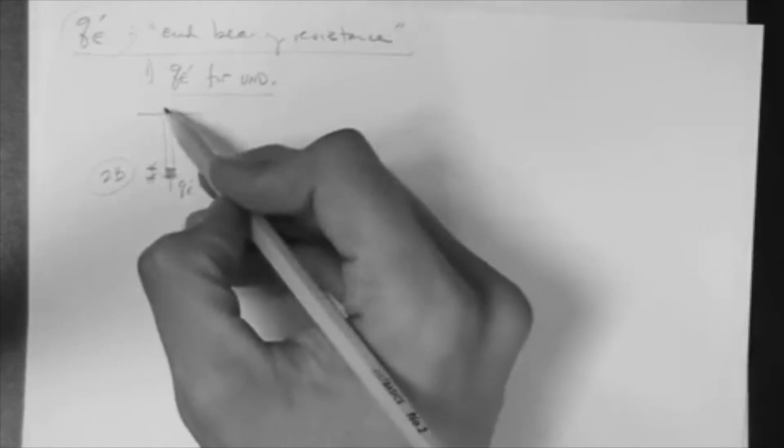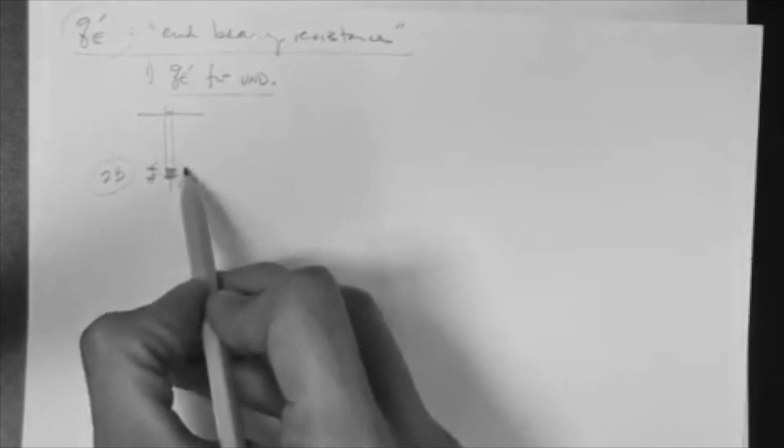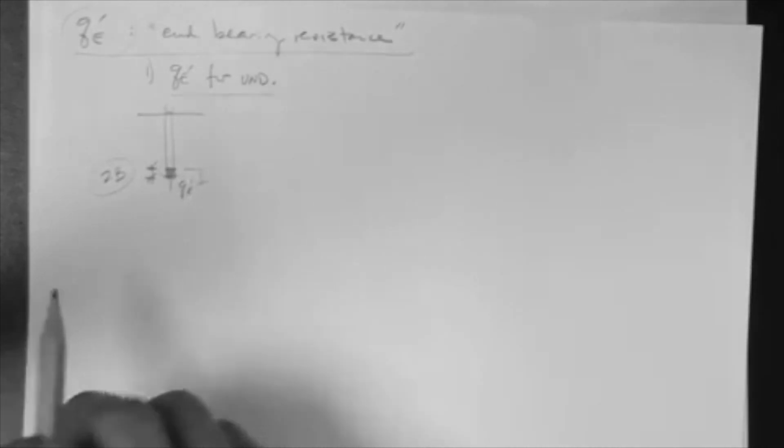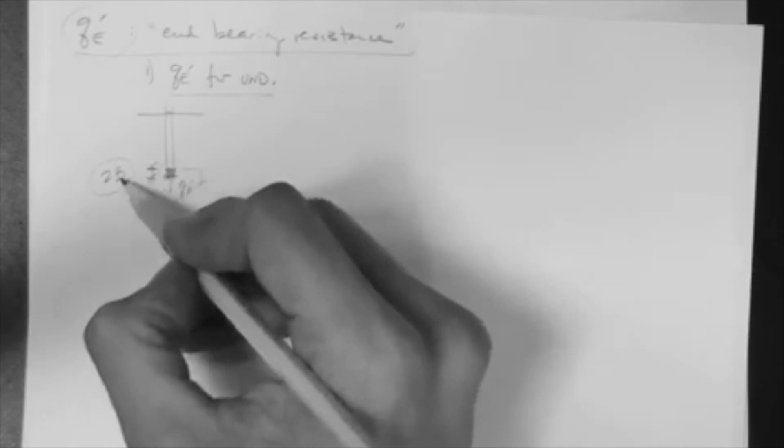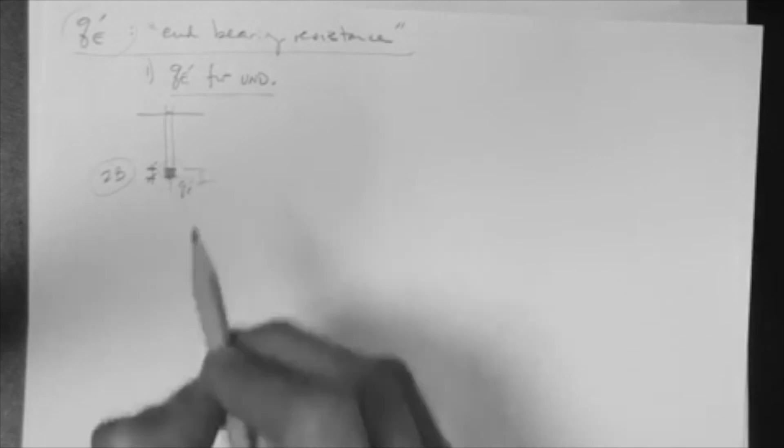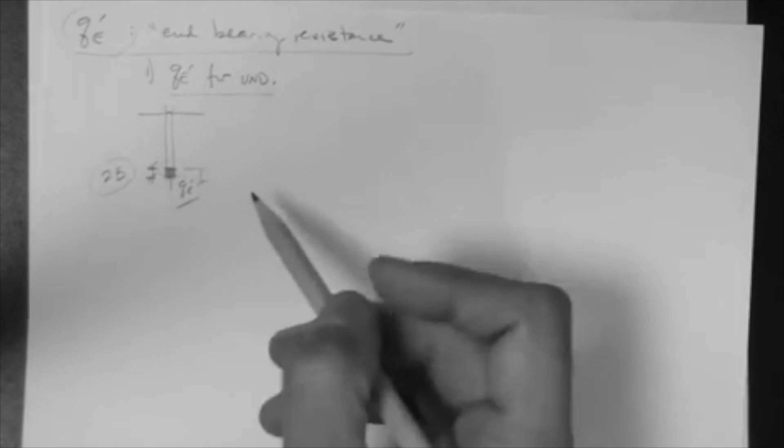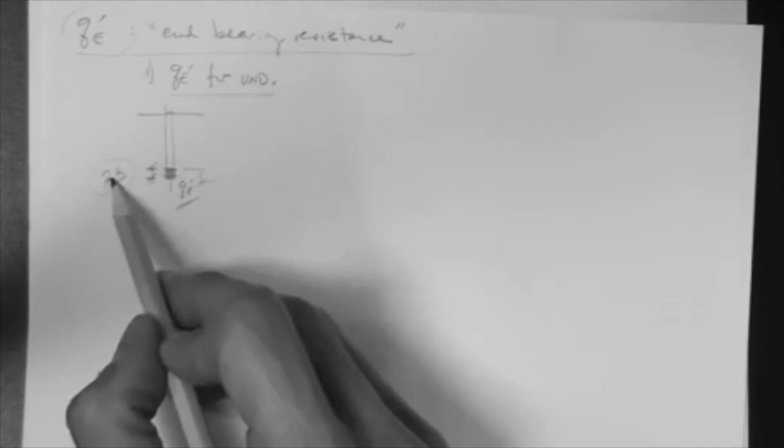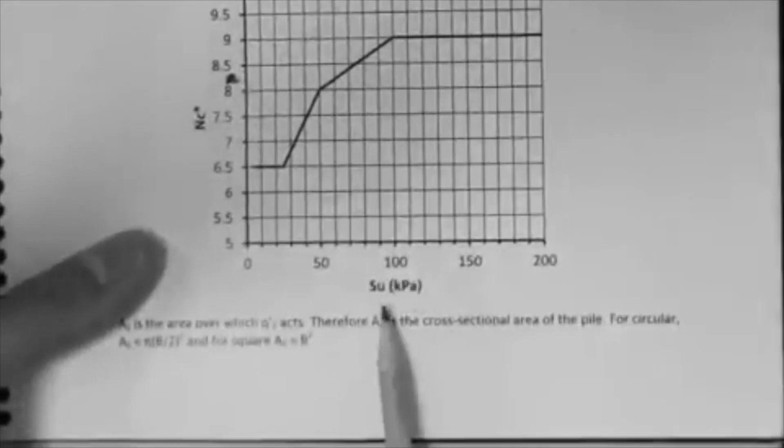But, let's say for a one foot diameter pile or so, it would be two feet, the zone would be two feet. So, in any case, that influence zone, which is 2b below the base for capacity, end-bearing capacity of a pile, or end-bearing resistance, to be more correct here. That is the zone that you are going to evaluate the Su at.